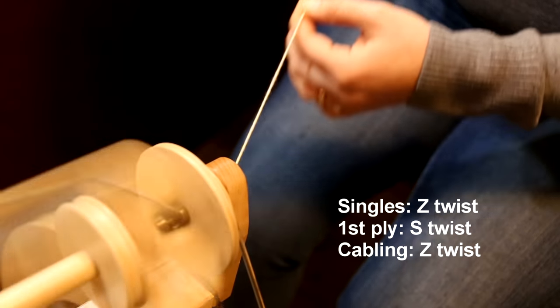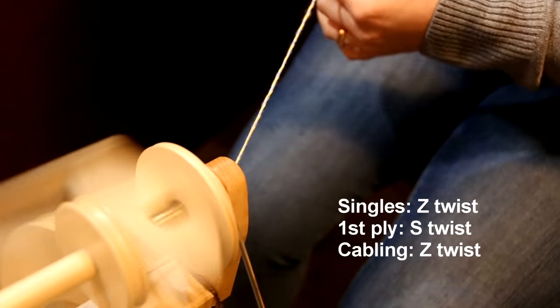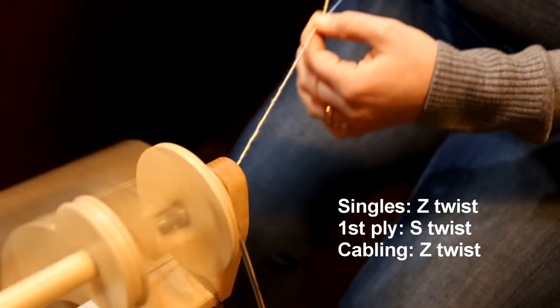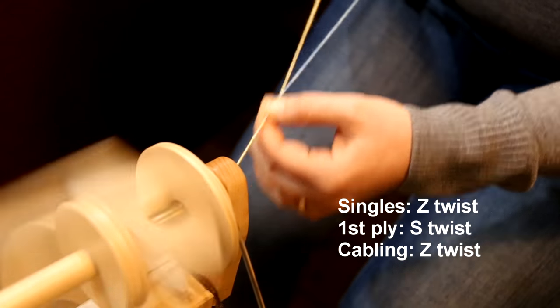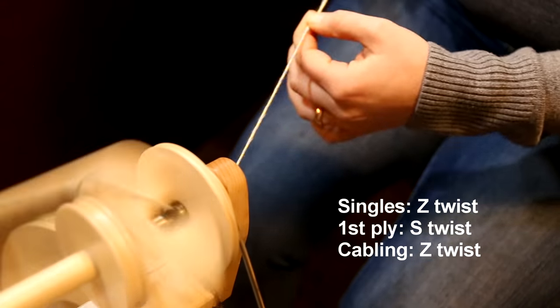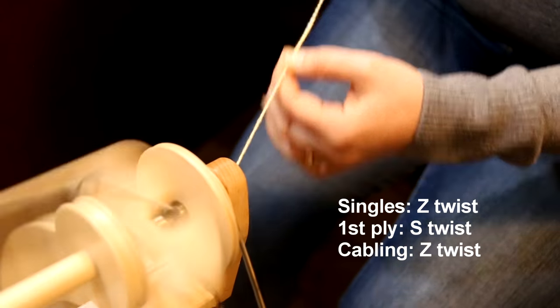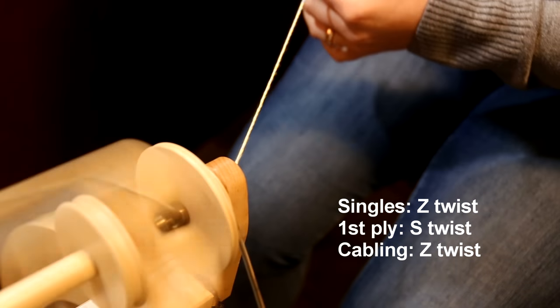So first your singles are spun Z twist with your wheel going to the right, and then you're plying your two-ply with your wheel going to the left or S twist, and then when you go back to ply again you're going to be plying Z twist again with your wheel going to the right. And that is what makes these yarns so cool.